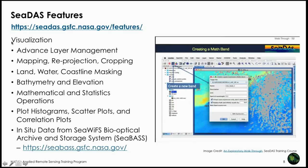CDAS features include visualization — the GUI is great for visualizing and customizing your display. There is advanced layer management, mapping and reprojection, different masks such as land, water, and coastline, and bathymetry and elevation information. Mathematical and statistical operations are available for data analysis. You can plot histograms, scatter plots, and correlation plots. You can also import in-situ data from SEABASS — the Chesapeake Bio-optical Archive and Storage System — directly into the GUI.